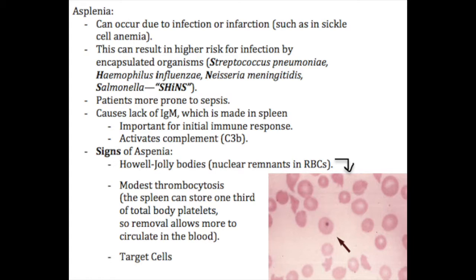The answer is that the spleen is a large powerhouse for initial interactions between B cells, T cells, and antigen presenting cells — it's a very important place where the initial immune response occurs. The initial immune response has a lot to do with the production of IgM, which is the initial antibody produced in the immune response.